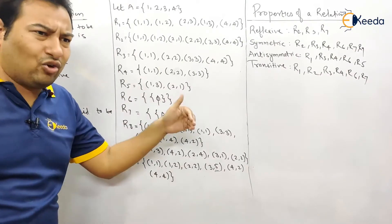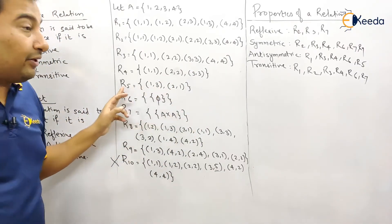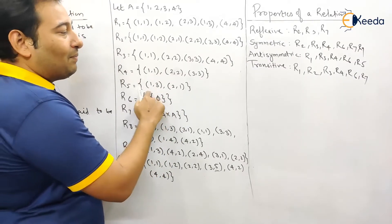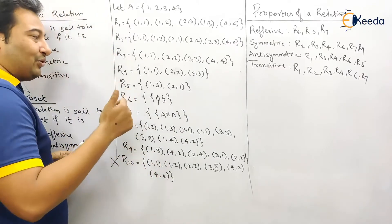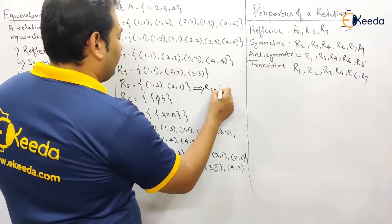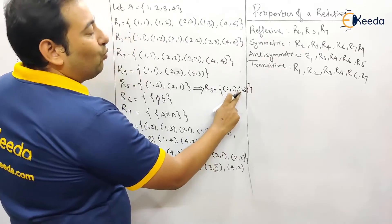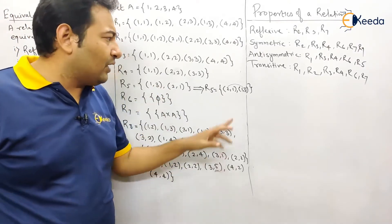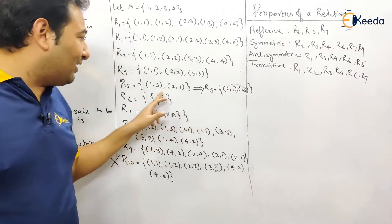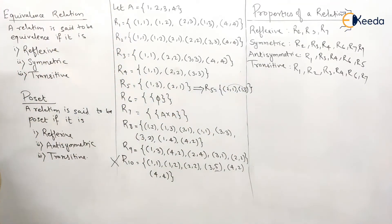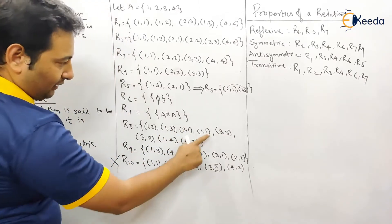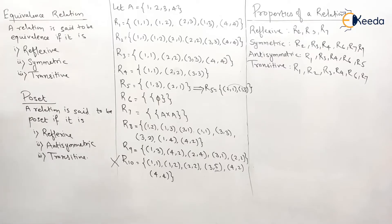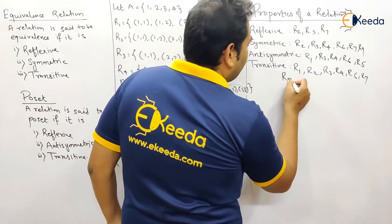R7 is transitive because all elements are present — (1,2), (2,3), and (1,3) are all there. For R5: (1,3) is present but nothing starts from 3, so the second condition is absent — only one condition, so it's transitive by rule. However, (2,1) and (1,3) are present so (2,3) must be present — but (2,3) is not in R5, therefore R5 is not transitive. R8: checking all chains — (1,3) and (3,1) gives (1,1) ✓; (3,2) gives chain to (3,2) ✓; (1,4) and (4,2) gives (1,2) ✓ — R8 is transitive.